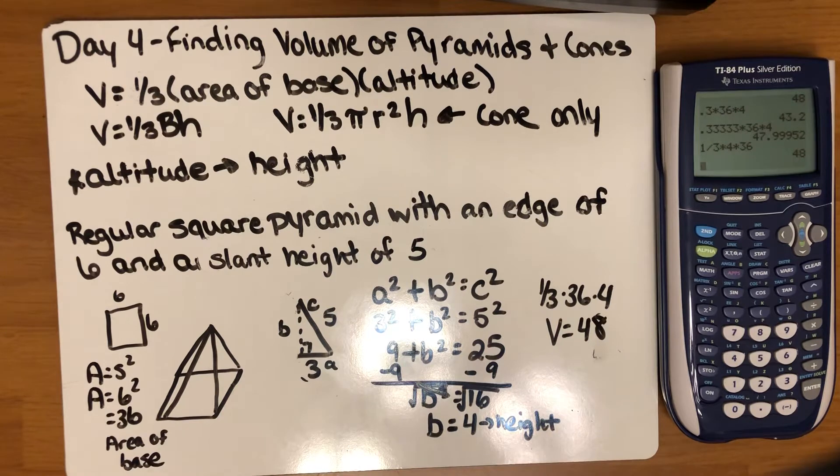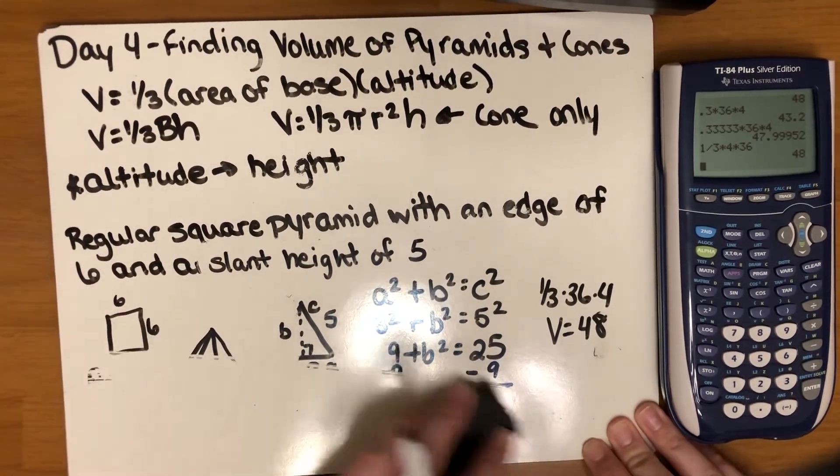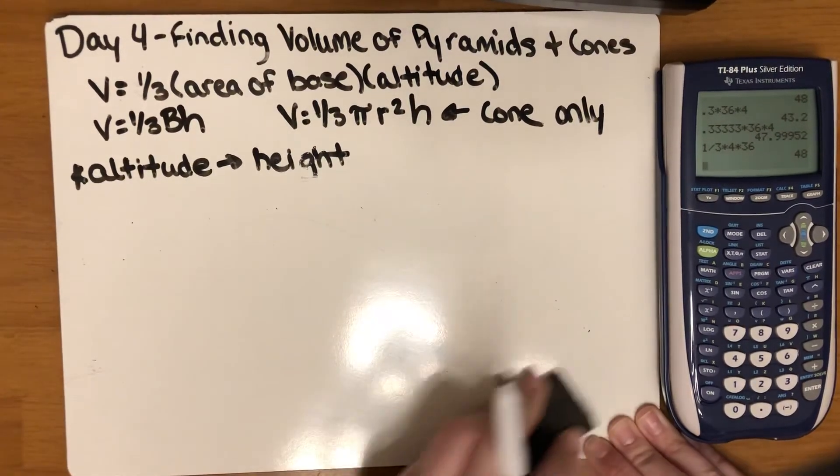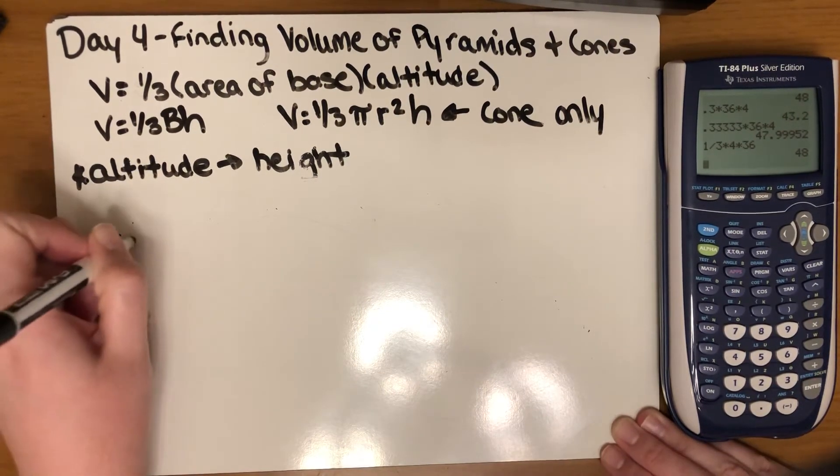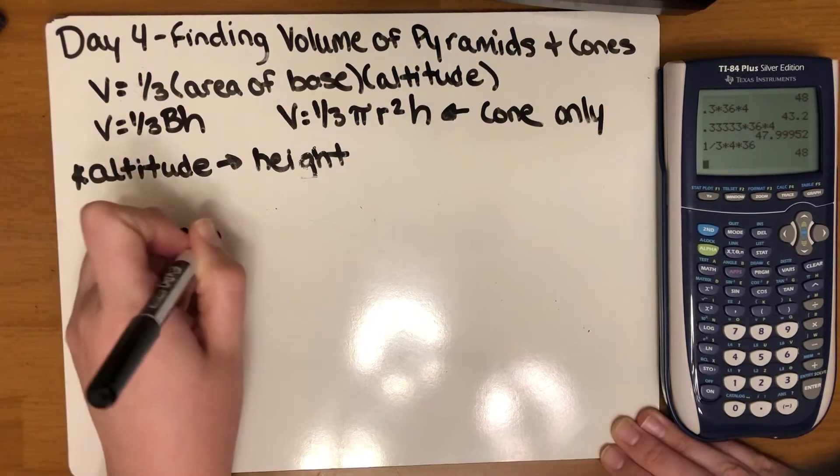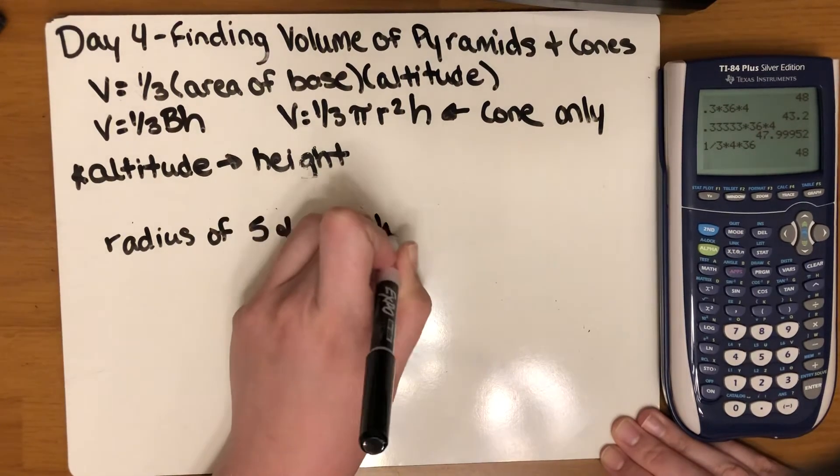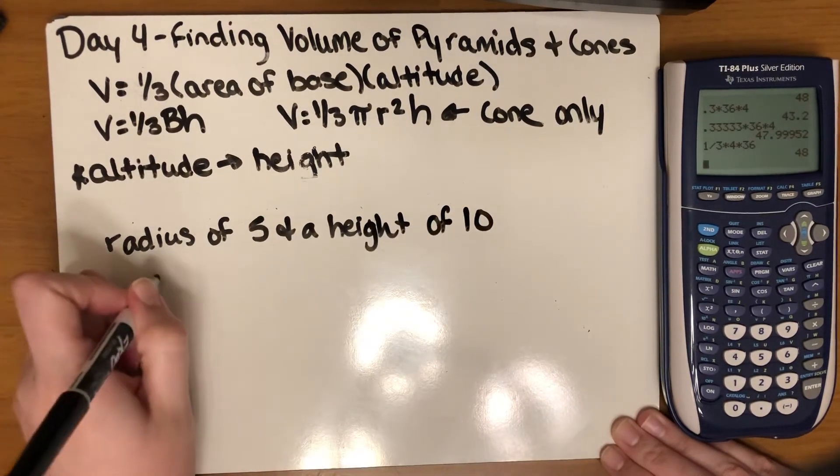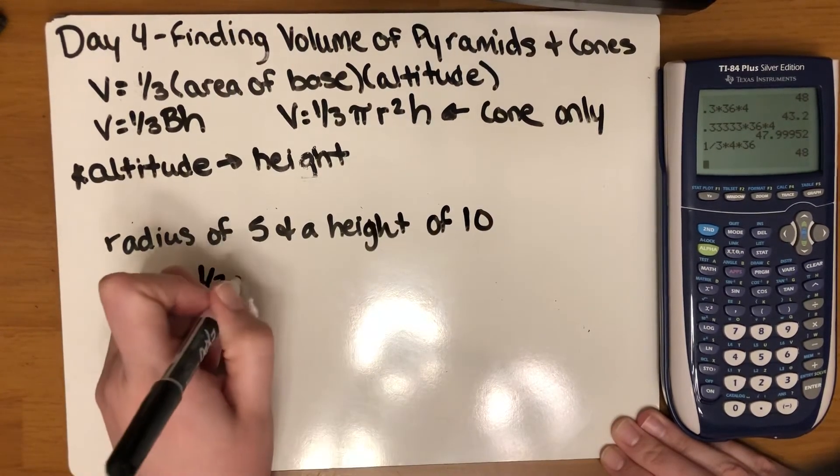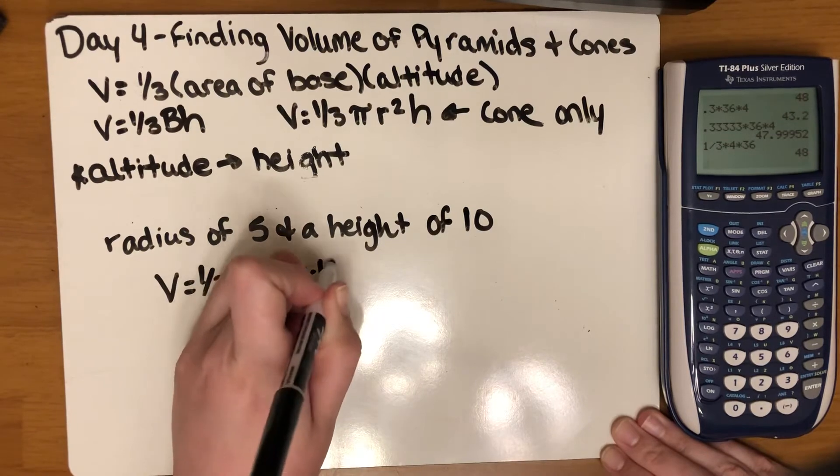The last two things I want to talk about is the volume of the cones and then a little bit about how the answers are given at the bottom for the puzzle. Let's get a volume of the cone problem. Let's say I'm looking for the volume of the cone with a radius of 5 and a height of 10. I'm going to take my formula: 1/3 times pi times radius squared. So 5 squared times the height which is 10.